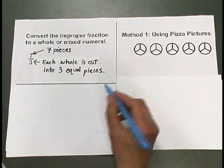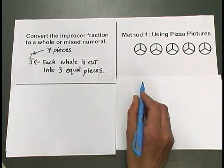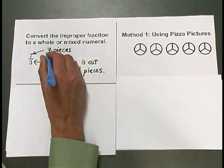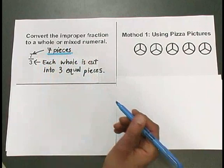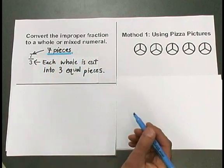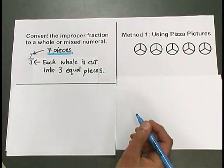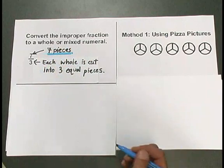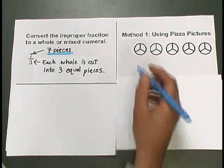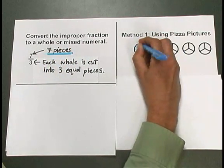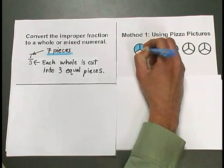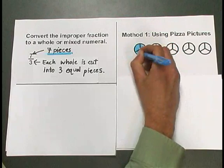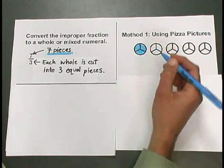Now let me take my blue highlighter to help us think about what the 7 tells us. We want 7 pieces of pizza total. That's how many I'm going to shade with my highlighter. I'm going to shade 1, 2, 3 pieces of 1 pizza,